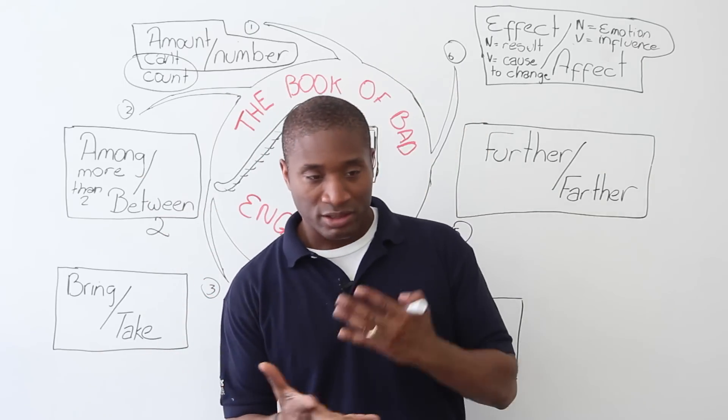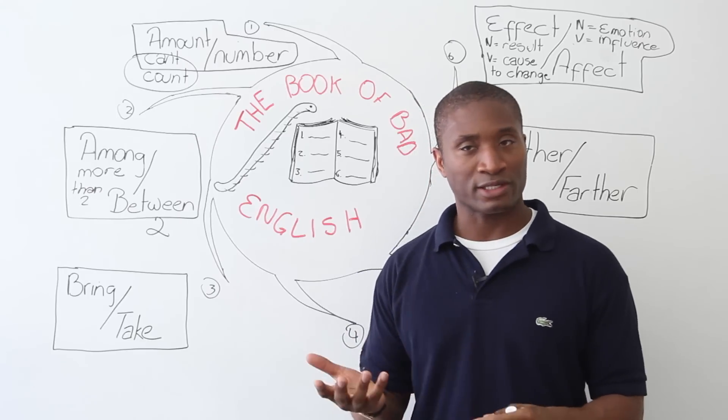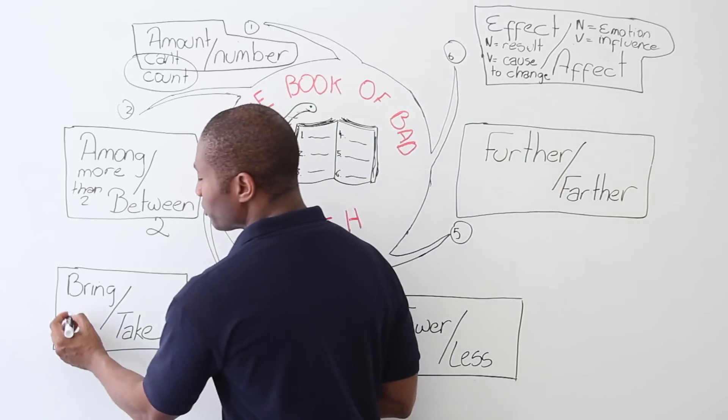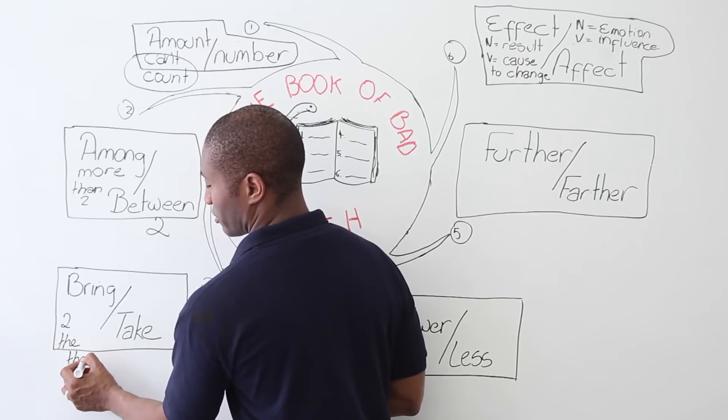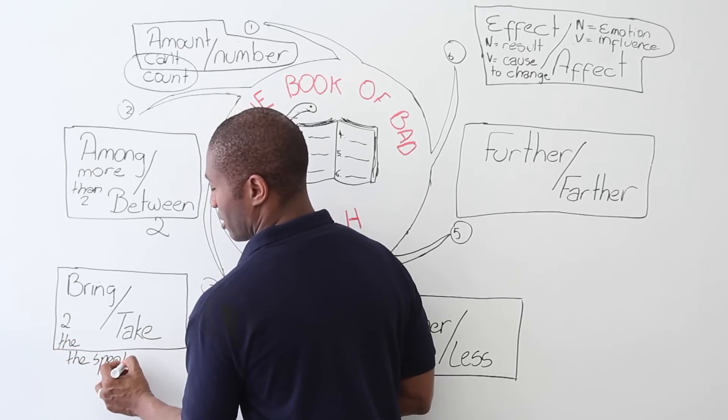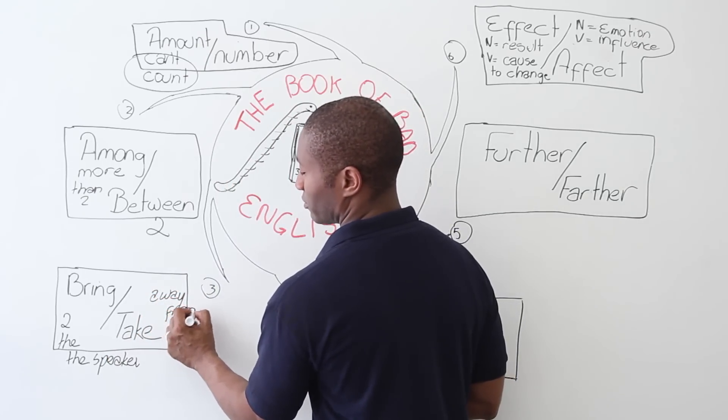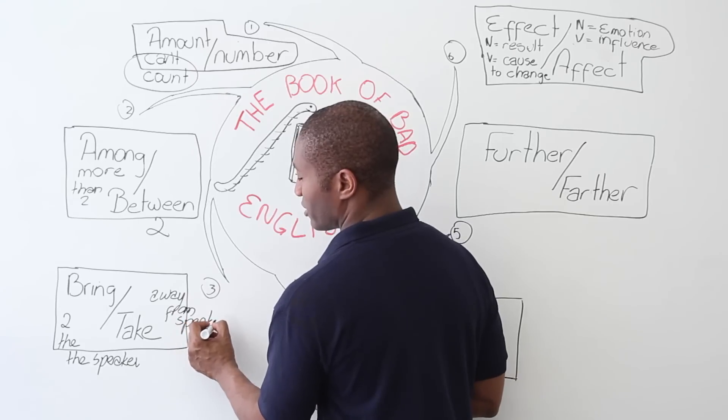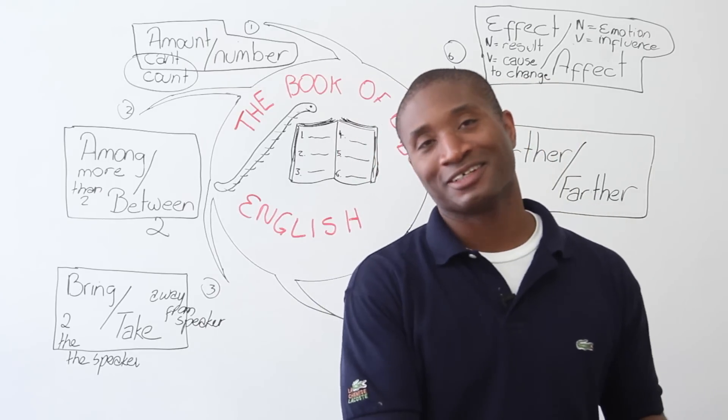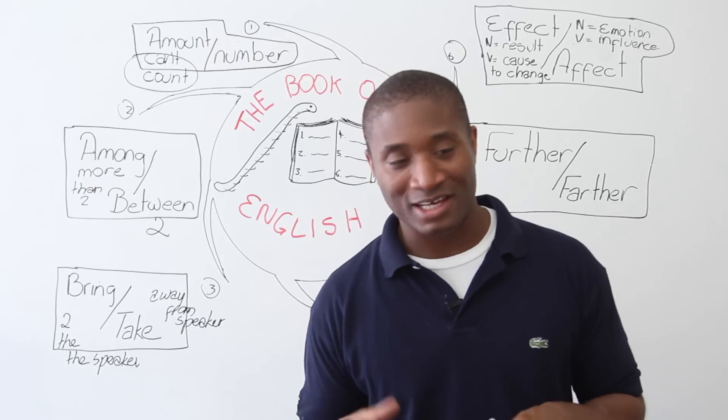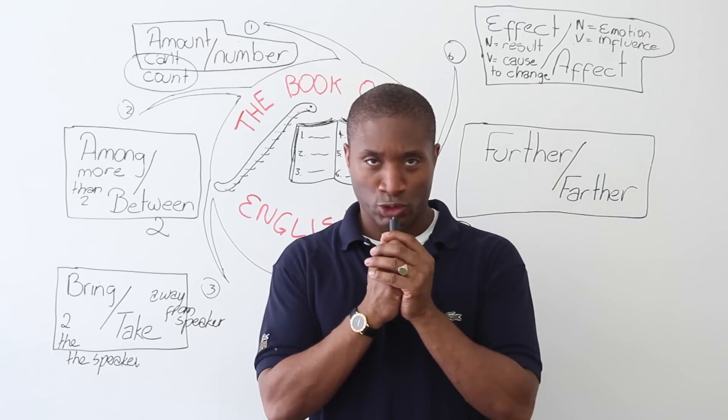What about bring and take? This is something that a lot of students make a mistake on. So you say, bring this to me or take this to him. It's very easy. Bring is to the speaker. And take is away from the speaker. Now, if you're born in England, that's easy because they always talk about I want a takeaway. I'll take away because they take the food away from the restaurant. Right?